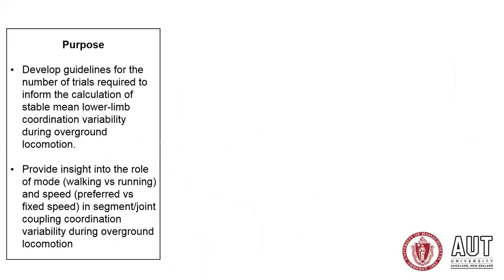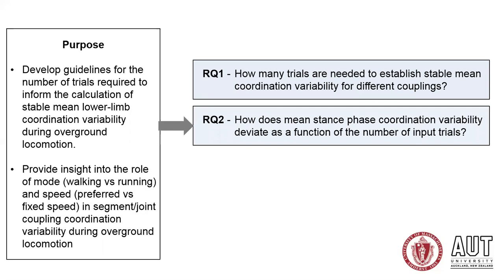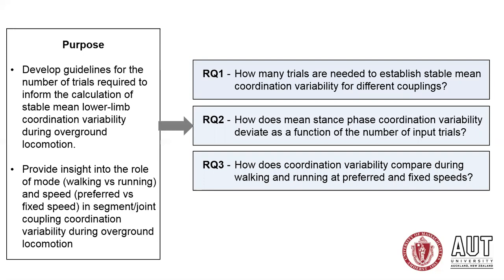The research I'll be presenting today has two distinct purposes: first, to develop guidelines for the number of trials required to inform the calculation of coordination variability during overground locomotion; and secondly, to provide insight into the role of the mode and speed of locomotion regarding segment and joint coupling coordination variability. To underpin these purposes, we designed three key research questions: how many trials are needed to establish stable mean coordination variability for different couplings; how does mean stance phase coordination variability deviate as a function of the number of input trials; and thirdly, to extend understanding of how coordination variability compares between walking and running and preferred and fixed speeds.